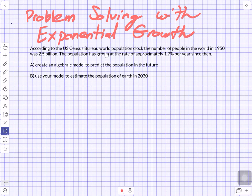According to the U.S. Census Bureau world population clock, the number of people in the world in 1950 was 2.5 billion. The population has grown at a rate of approximately 1.7 percent per year since then. Create an algebraic model to predict the population in the future, and use your model to estimate the population of the Earth in 2030.